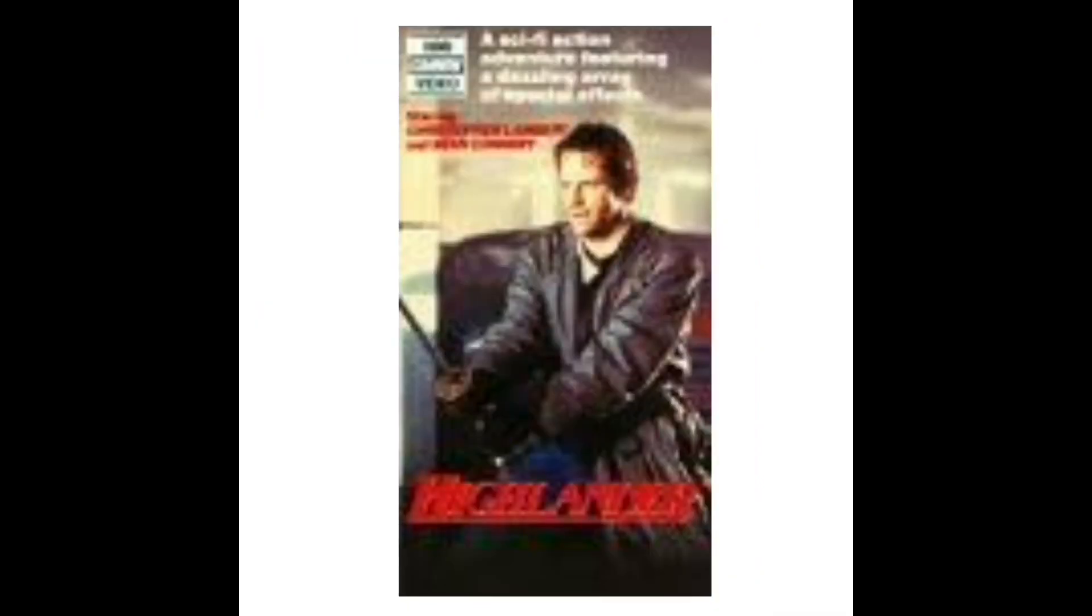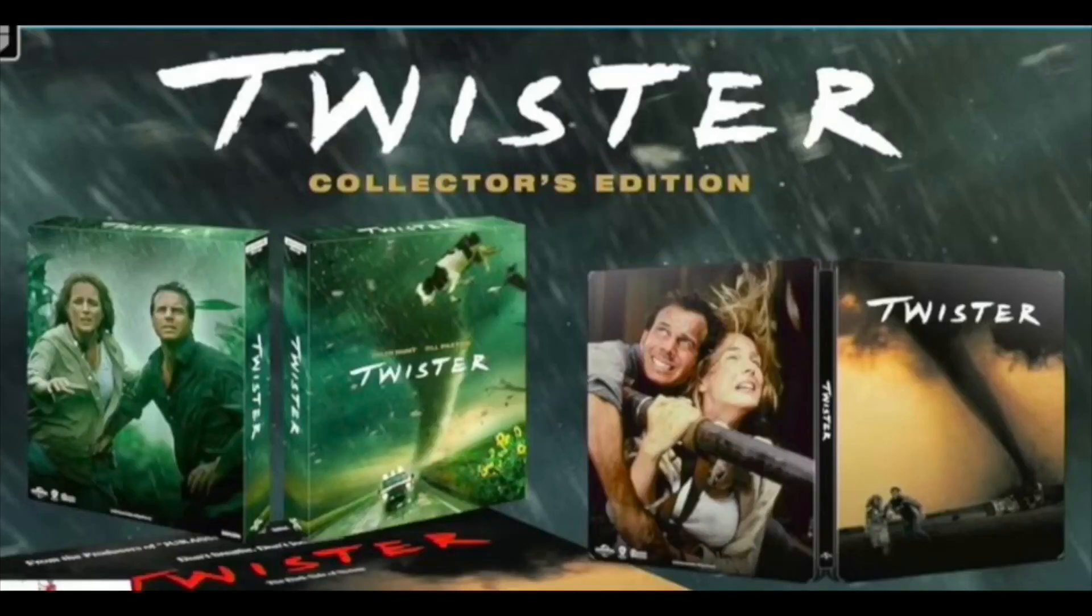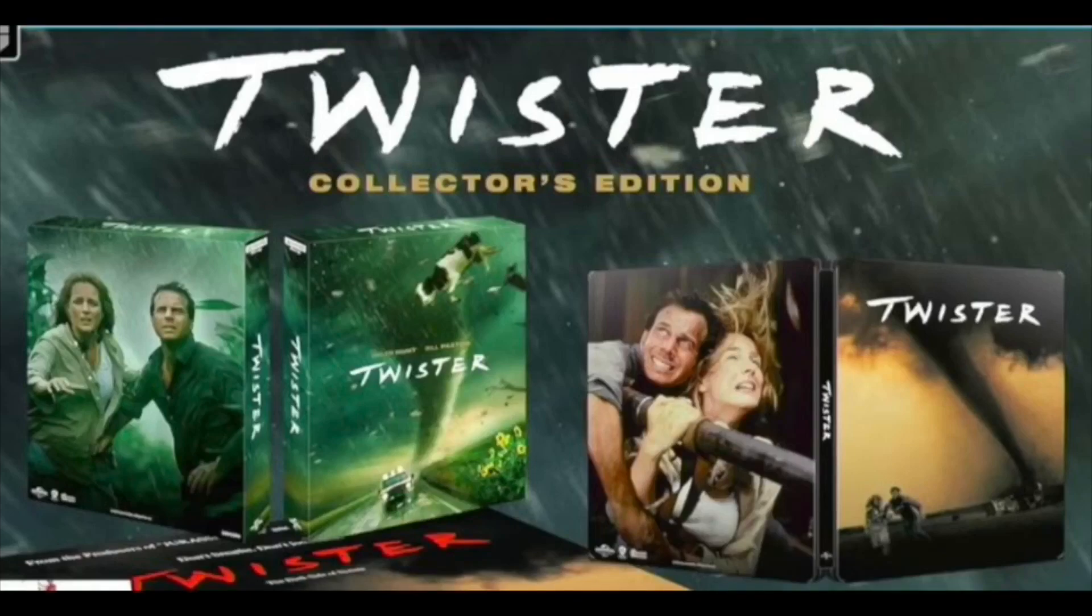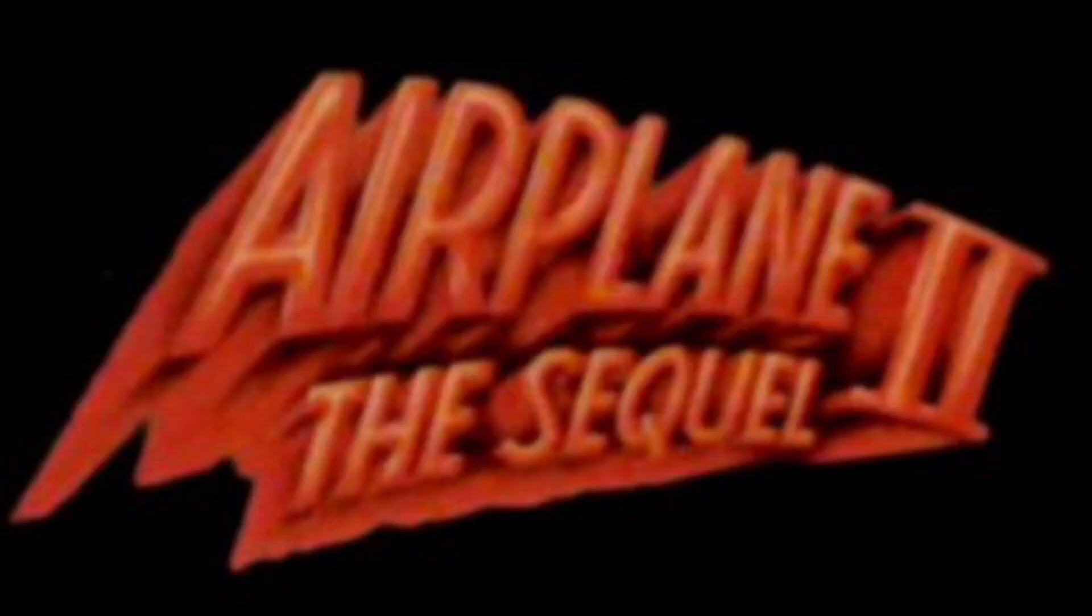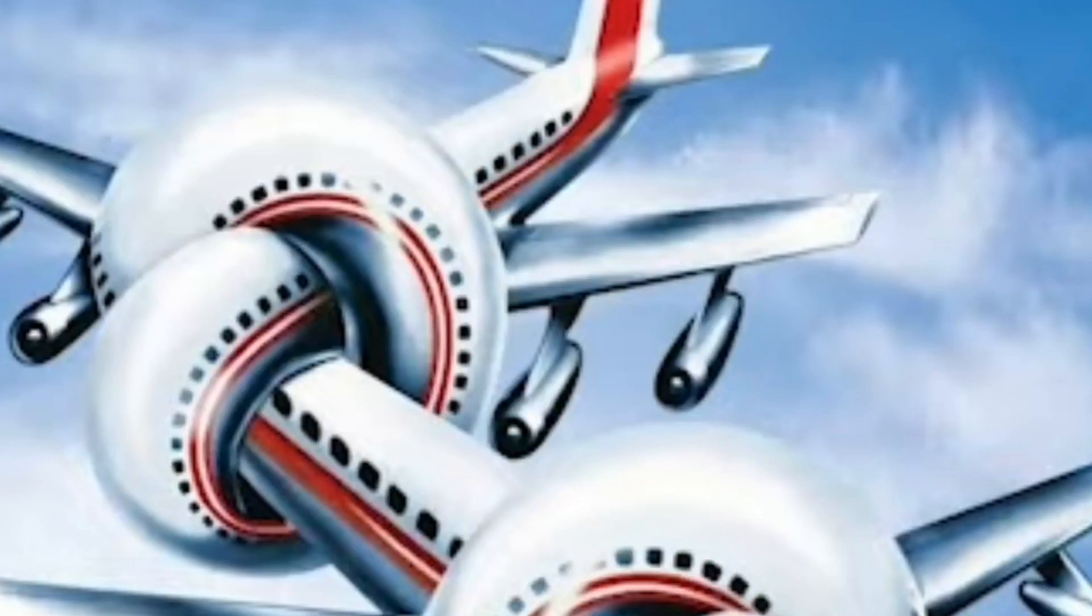And yes, even Airplane 2 the sequel. Oh, and get this, a special collector's edition of Twister, complete with a steelbook that features not only the secondary poster artwork, but the image of the pipe scene on the back. Heck yeah, I'm getting this. And also Airplane 2 the sequel, which had this cover. Just look at those knots! I can't keep up with them all!